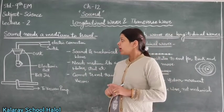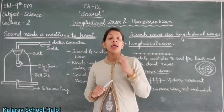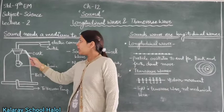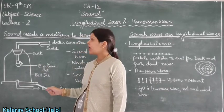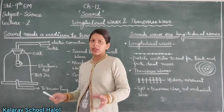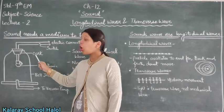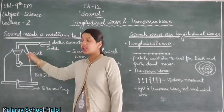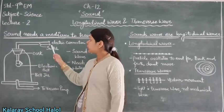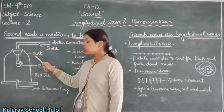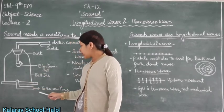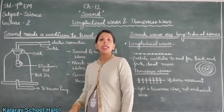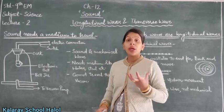Here is the experiment showing that sound needs a medium to travel. Take an electronic bell and suspend it inside a bell jar. The bell jar is an airtight container sealed with a cork. Through the cork, there are switch and electricity connections which are connected to the electric bell. The bell jar is also connected to a vacuum pump.